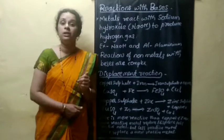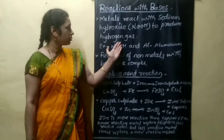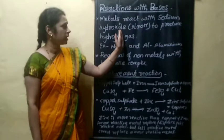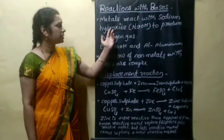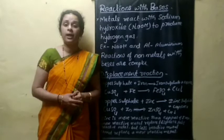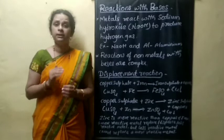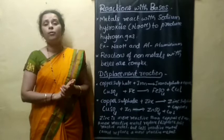Metals react with bases and produce hydrogen gas. However, reactions of non-metals with bases are very complex. Strong metals react with sodium hydroxide and produce hydrogen gas, but non-metals do not react with bases easily, and when they do, the reaction is complex. We have also studied an important reaction — the displacement reaction — which you studied in 7th standard.